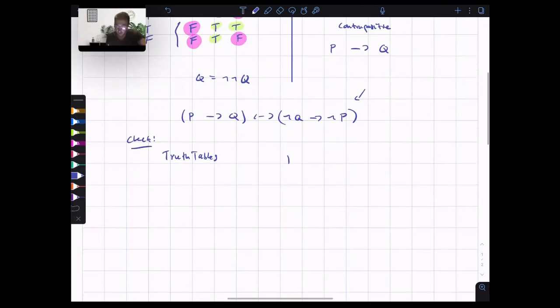And this is really, really important in doing proofs. Proof by contrapositive is one of the main proof techniques. You have direct proofs, you have proof by contradiction, you have induction, you have tons of other proof types. Contrapositive is one of the main ones.